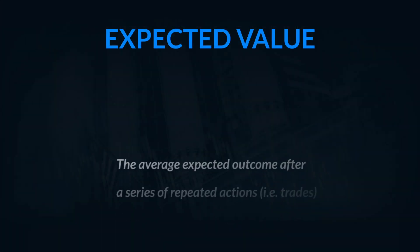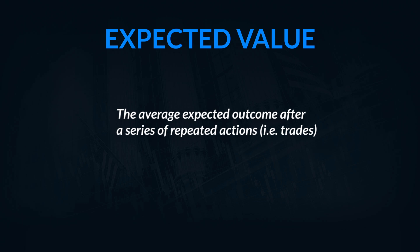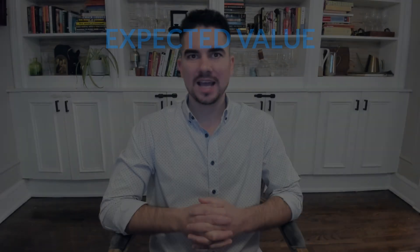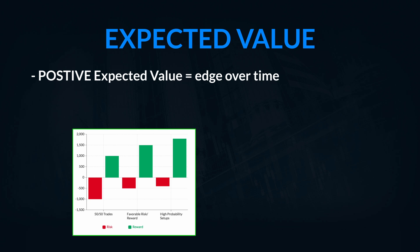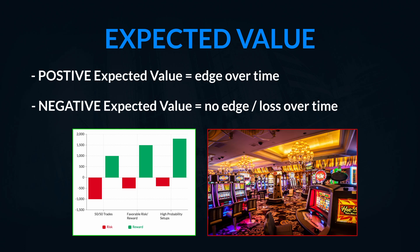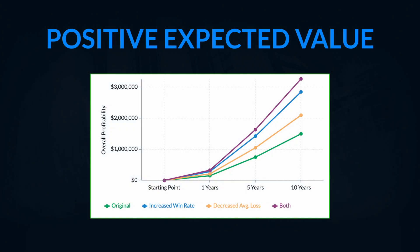To begin our conversation, we have to talk about expected value — what it is and how it relates to us as traders. Expected value is simply the average weighted outcome, or the outcome that we could expect after doing something many times. For traders, that means after taking a trade setup many times, what is the net result over time? Is it a net positive — a positive expected value — or is it a net negative? This is similar to a casino slot machine, where the house edge means over many pulls, the house profits. We want a similar edge in our trading.